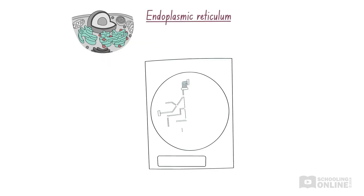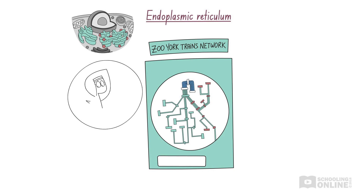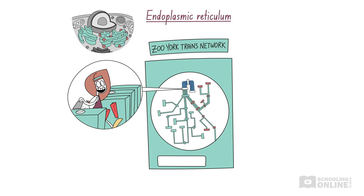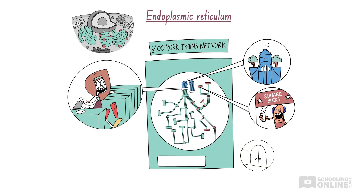Let's return to Sally for a minute. She's catching the subway with her classmates. At the subway station, they tap their phones, which processes their tickets for the exciting ride ahead. The subway tunnels stretch from the city centre to the suburban neighbourhoods. After a while, their journey ends at a bustling station. Sally notices that the Zoo York City subway, which extends from the city centre to the quiet suburbs, resembles the endoplasmic reticulum, which extends from the nuclear membrane to the cell membrane.